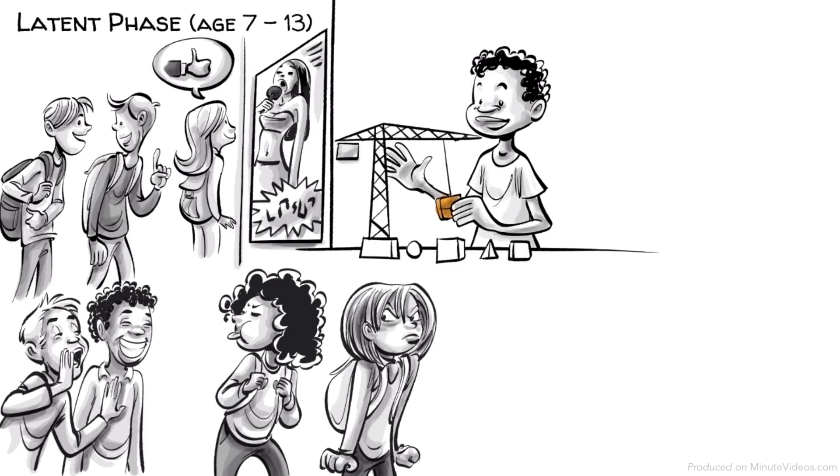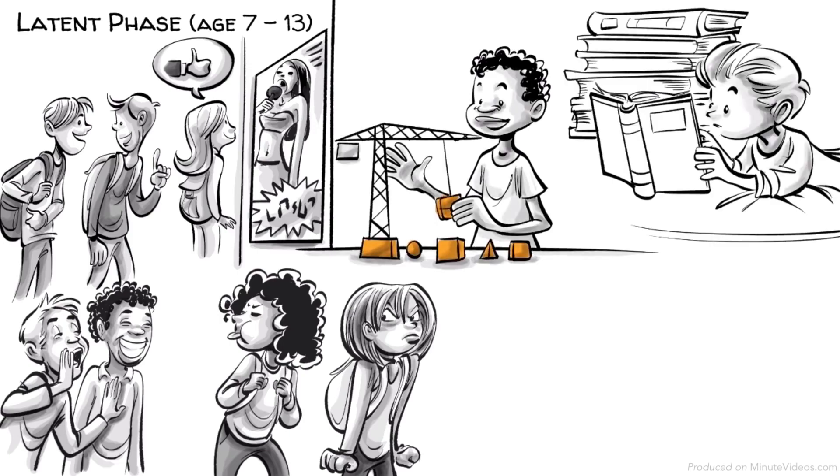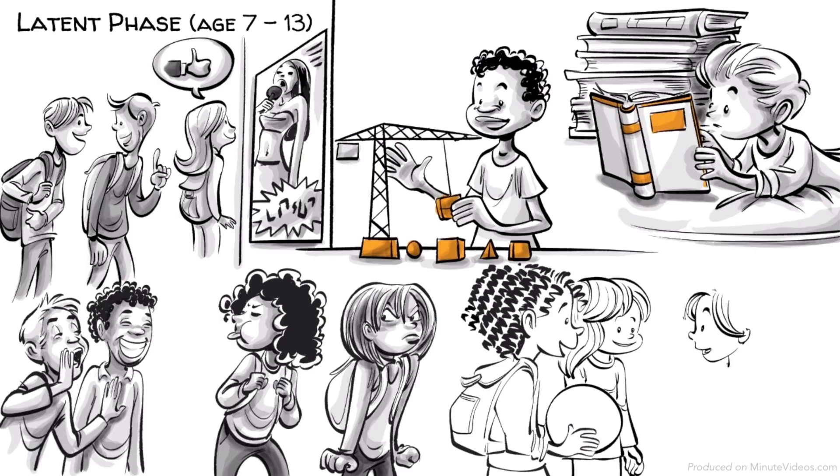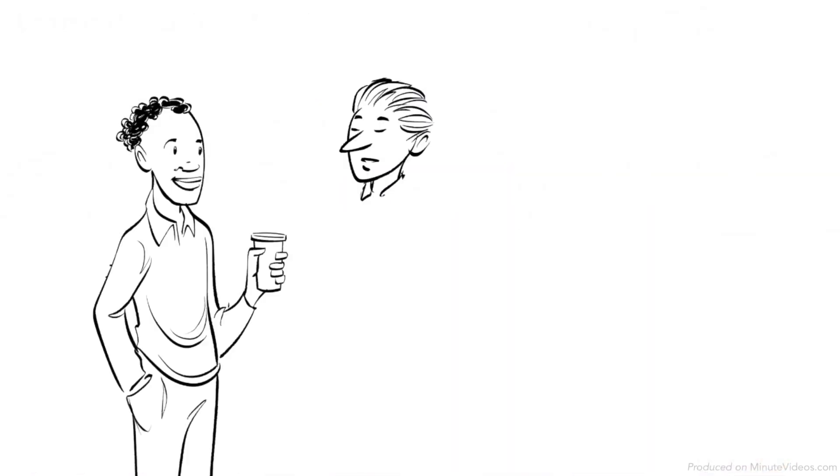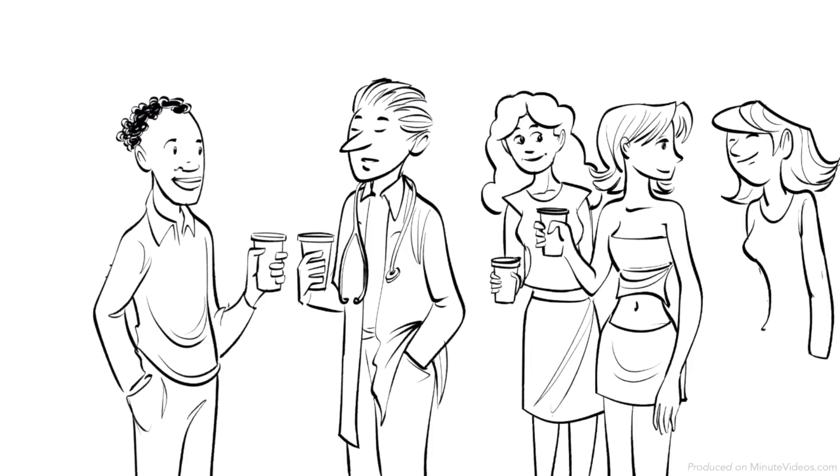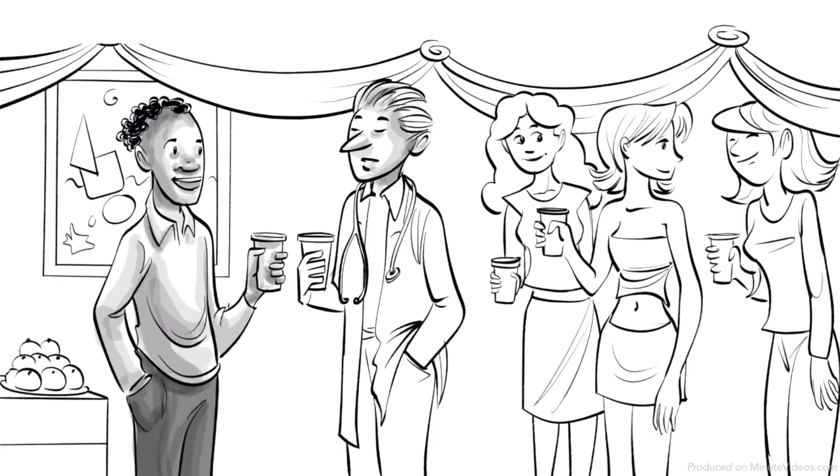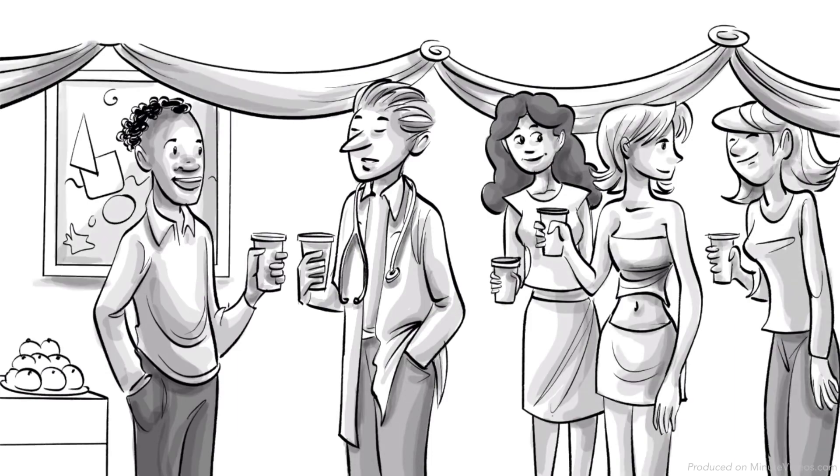Hans follows many hobbies. Ernst loves learning at school and Ida makes lots of new girlfriends. There is no real conflict in this phase. All three of them benefit for the rest of their lives from the skills they developed during latency.